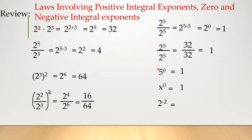Any number raised to 0 is equal to 1. And for a negative exponent, simply get the reciprocal — that is 1 over 2 raised to the 2nd power. So get the reciprocal: once it's in the denominator, you change the negative exponent to positive.